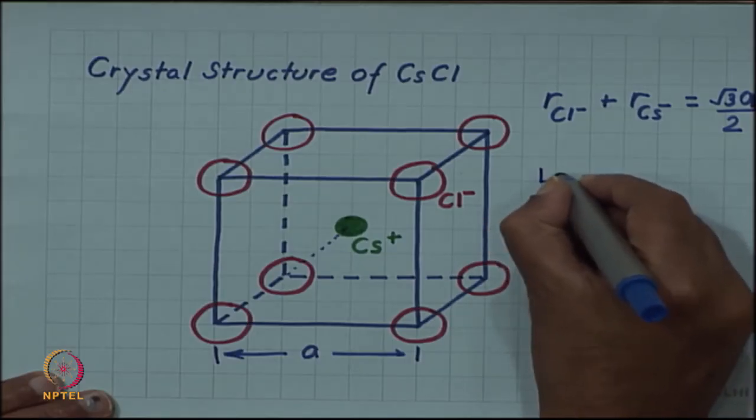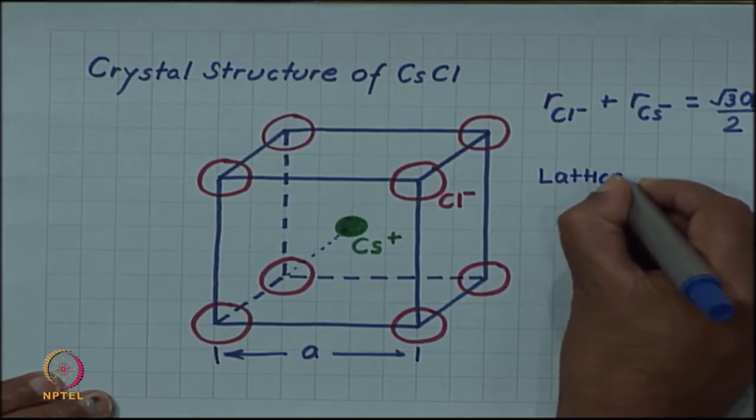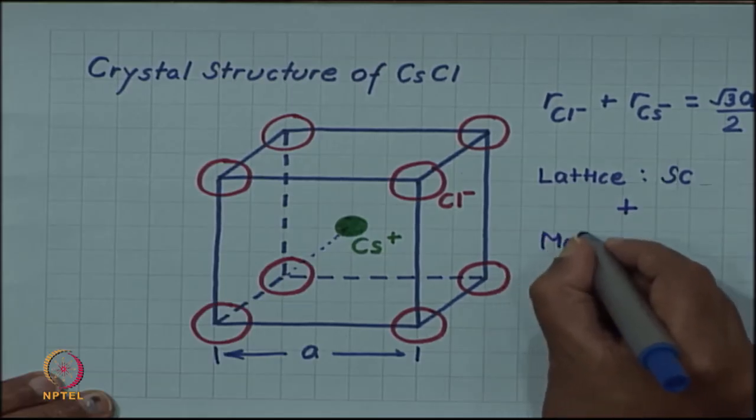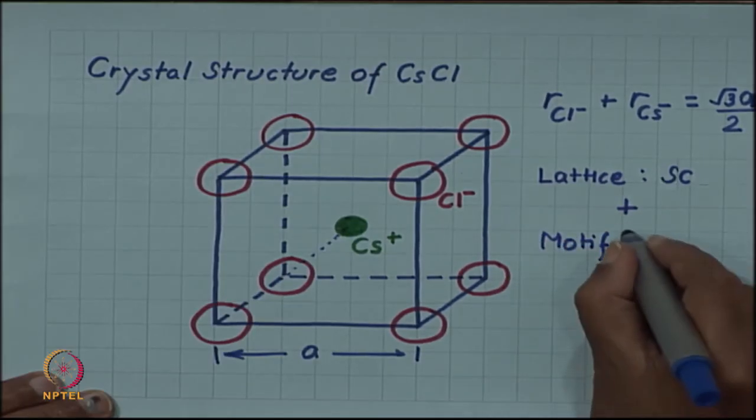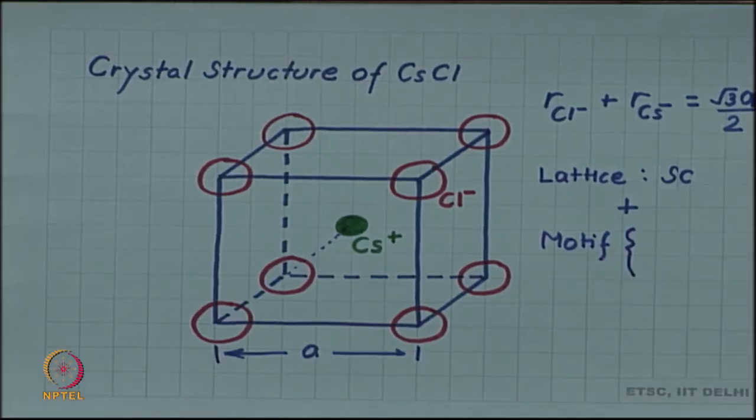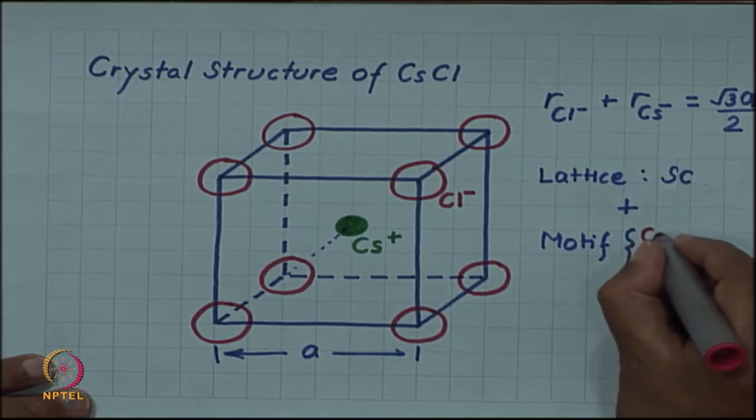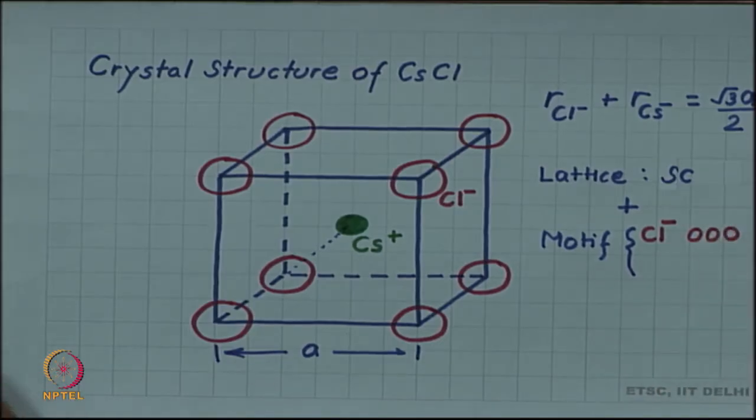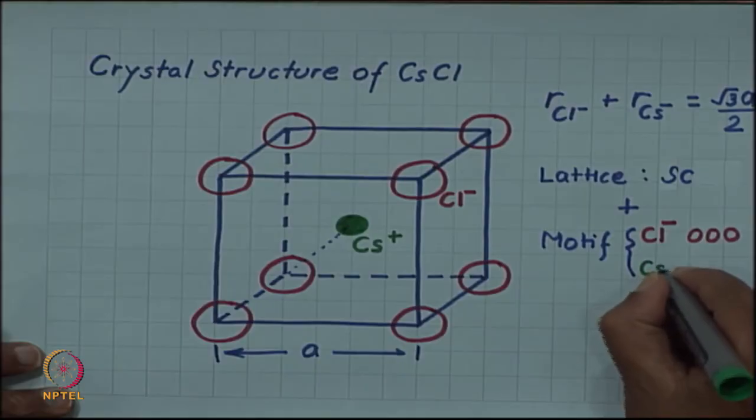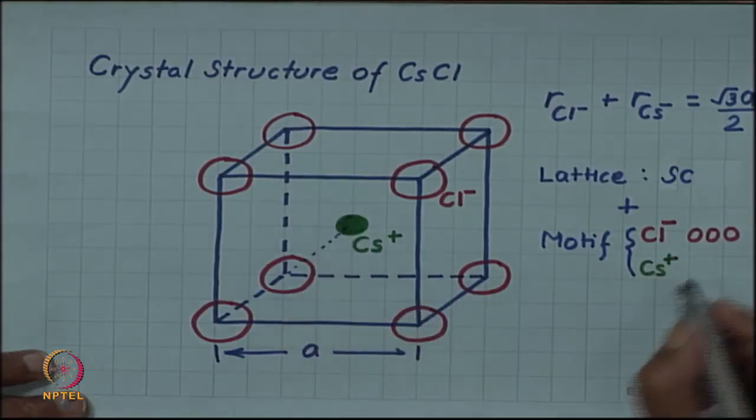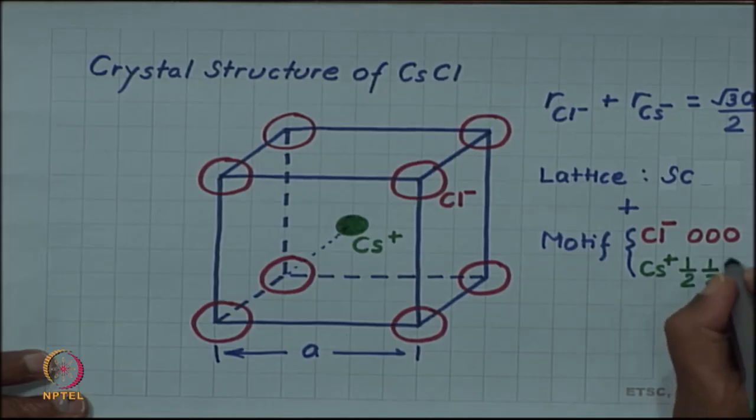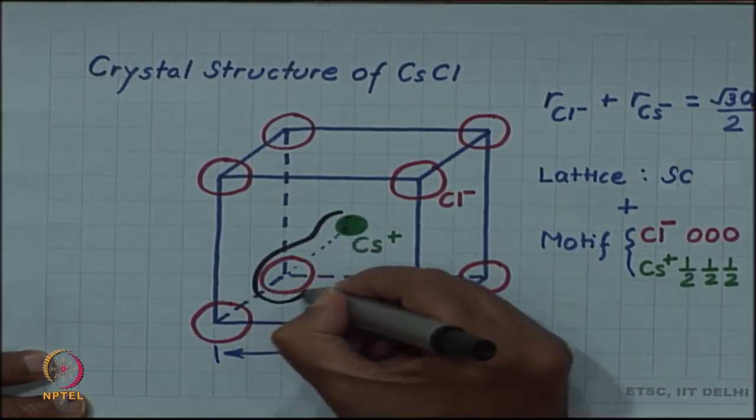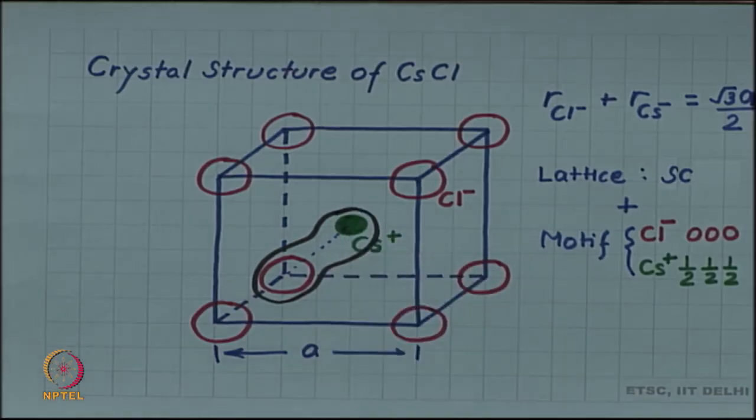The lattice is simple cubic and the motif is a two-atom motif: a chloride ion at the lattice point (0,0,0) and a caesium ion at the body center of the cube, described by the location (1/2, 1/2, 1/2). The motif is a pair of caesium and chlorine atoms.